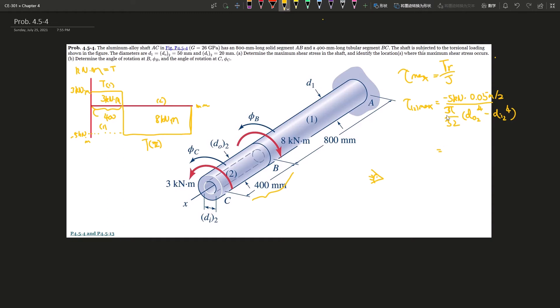So I have to divide it by 2 because that's the diameter. So divided by pi over 32 times dO2 to the power of 4 minus dI2 to the power of 4. We have all this information. This is 0.05 meter, and this is 0.02 meters, and we plug everything into your calculator. This should give you somewhere around negative 203.7 megapascal.